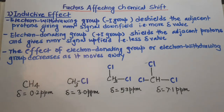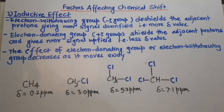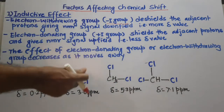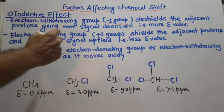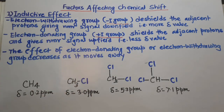The first factor is the inductive effect. There are two types of inductive effect. One is the minus-I effect, when an electron-withdrawing group is present in the molecule — because of its electronegativity, that group withdraws electron density away from the molecule. The other is the plus-I effect, where an electron-donating group is present which donates electron density to the molecule.